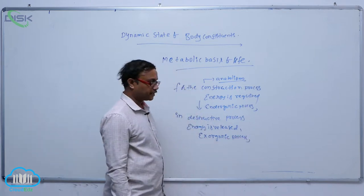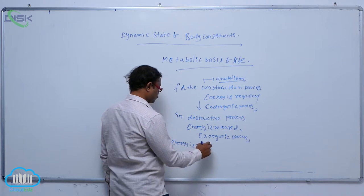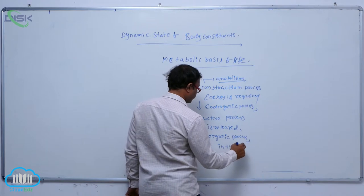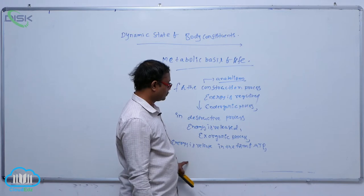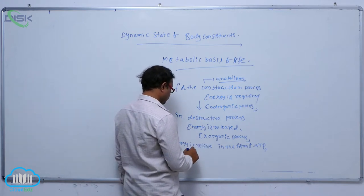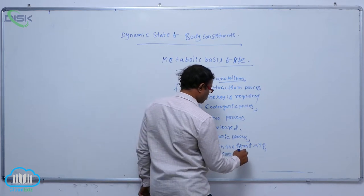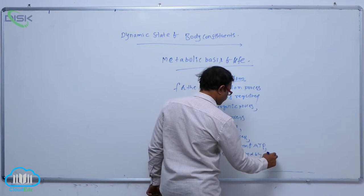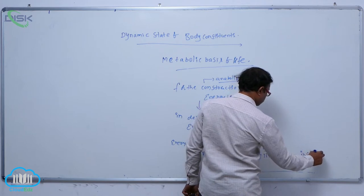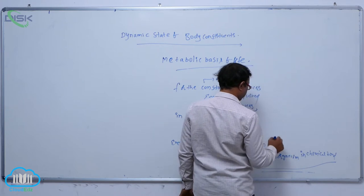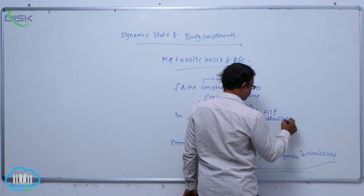In the exorganic process, energy is released in the form of ATP. This energy is stored by the living organism in chemical bonds. This releasing energy is stored by living organisms in chemical bonds. That is known as ATP, adenosine triphosphate.